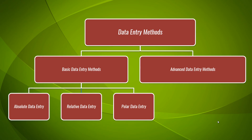There are several ways to enter data in AutoCAD. The data entry methods are divided into two: basic data entry methods and advanced data entry methods. Here, in this session, we are discussing basic data entry methods. There are three types: absolute data entry method, relative data entry method, and polar data entry method. We will be discussing advanced data entry methods in the upcoming videos.